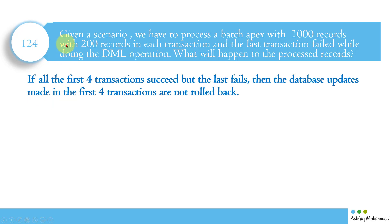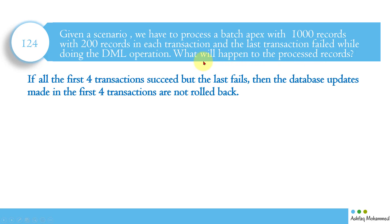Let's understand the question a bit more, since it's scenario-based and can be tricky. We have a batch class processing 1000 records with 200 records per batch — that means we have five batches. There will be five transactions in total, and the last transaction failed while doing the DML operation — which could be insert, update, or anything.